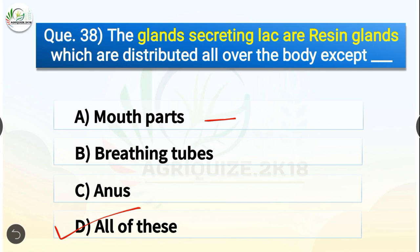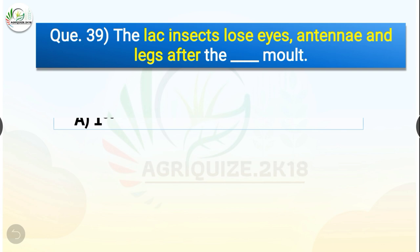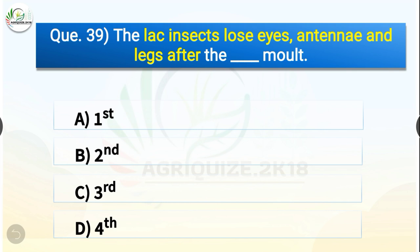Question number thirty-nine: The lac insects lose eyes, antennae, and legs after the dash molt. The options are first, second, third, or fourth. The correct answer is option A — first. The lac insects lose eyes, antennae, and legs after the first molt.